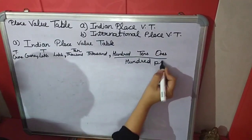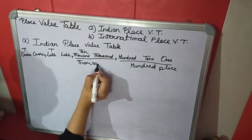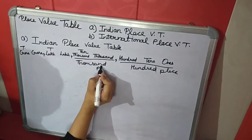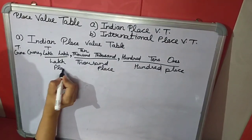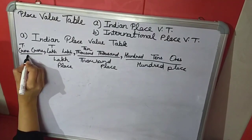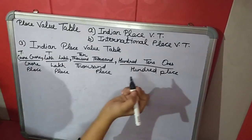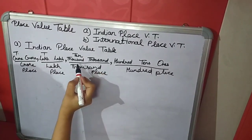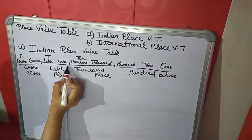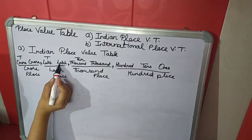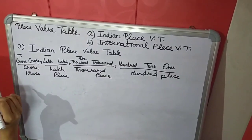This is called the Hundreds place, this is called the Thousands place, this is called the Lakhs place, and this is the Crores place. In the Thousands place, Thousand and Ten Thousand come together — that is why it is called the Thousands place, and we put a comma before Ten Thousand. Lakhs and Ten Lakhs are the members of the Lakhs place, and these are the members of the Crores place.